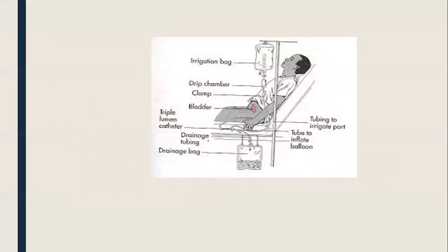This is a picture of how we perform continuous irrigation using an IV stand. For intermittent irrigation, a syringe may be used, whereas for continuous irrigation we use an IV stand with an irrigation bag and drip chamber.